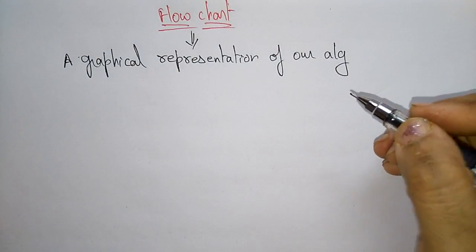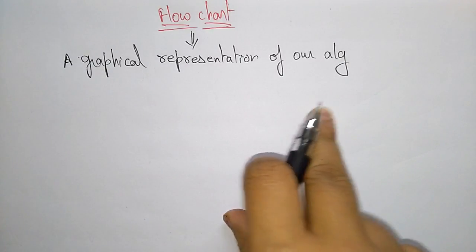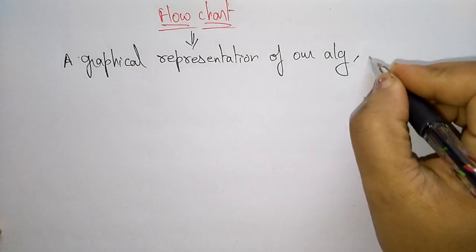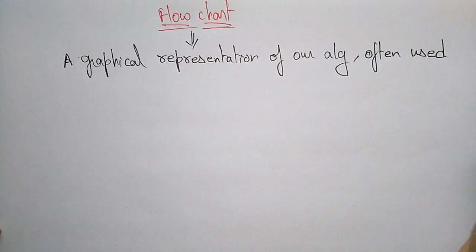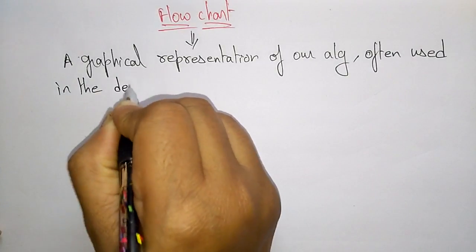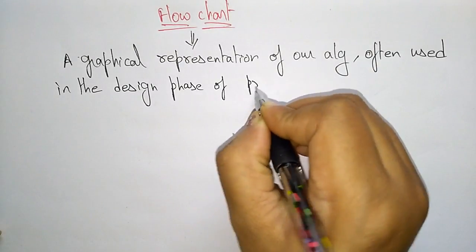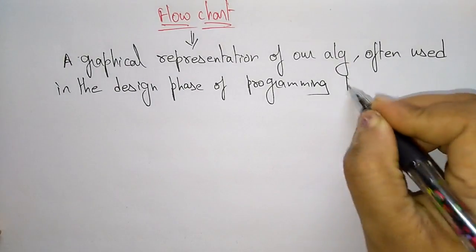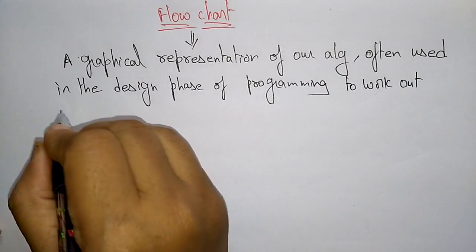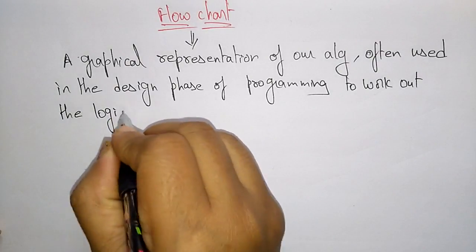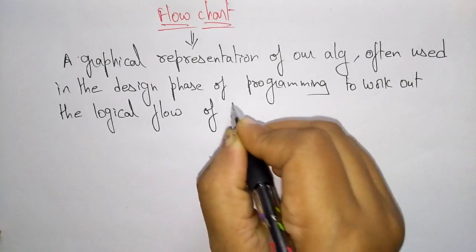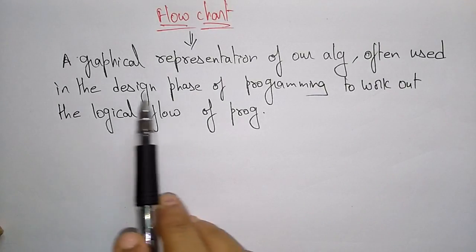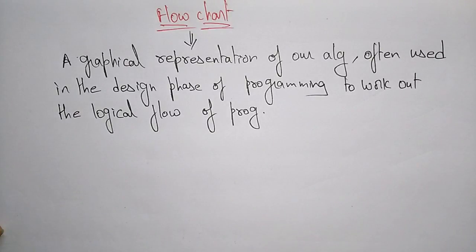An algorithm is a step-by-step procedure. For that step-by-step procedure, we represent it in a graphical format that we call a flowchart. This graphical representation of our algorithm is often used in the design phase of programming to work out the logical flow of a program.